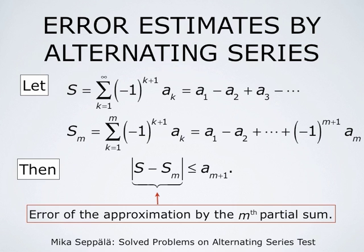Furthermore, if s is the sum of a convergent alternating series — so s equals summation k from 1 to infinity of negative 1 to the power k plus 1 times ak — and the numbers ak satisfy the conditions of the alternating series test, then the partial sum sm approximates the value of the sum s with an error bounded by the absolute value of the first term left out. So the absolute value of s minus sm is at most am plus 1, which is the absolute value of the first term left out.